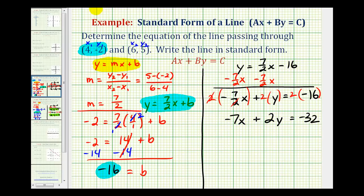We'll multiply the left side of the equation by negative one and the right side by negative one. So the equation in standard form could also be expressed as seven x minus two y equals positive thirty-two.